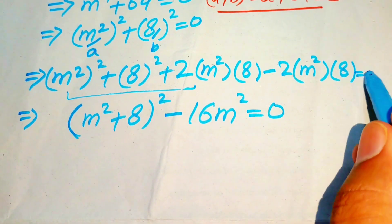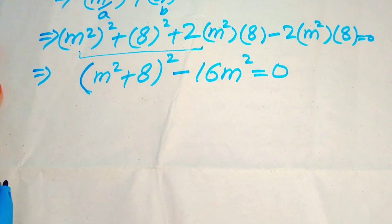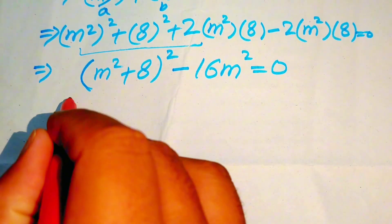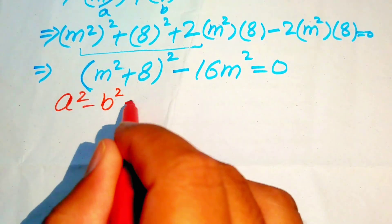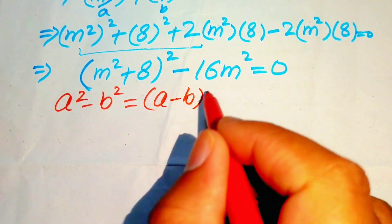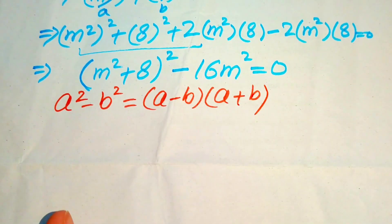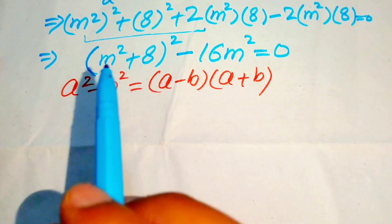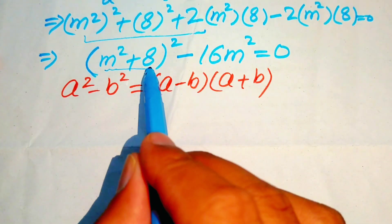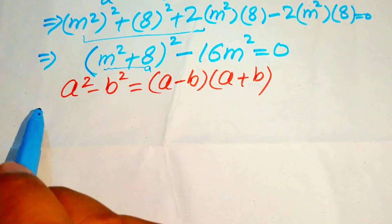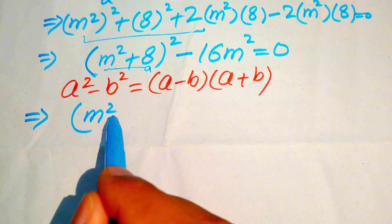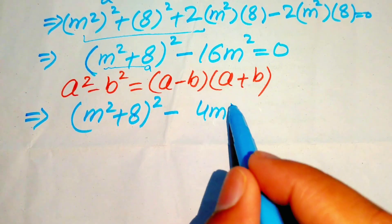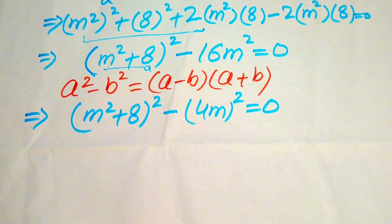In the next step we use another algebraic identity: a squared minus b squared equals (a minus b)(a plus b). Here, m squared plus 8 is our a. We rewrite the equation as (m squared + 8) whole squared minus (4m) whole squared equals 0.